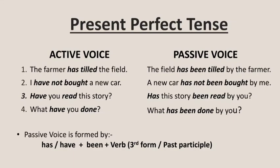So, we must remember that in the present perfect tense, passive voice is formed by using has/have plus been plus the third form of the verb, or the past participle. By following these given structures, we can change sentences from active voice to passive voice in all the present tense forms. In our next video, we are going to discuss active and passive voice with reference to past tense and future tense.